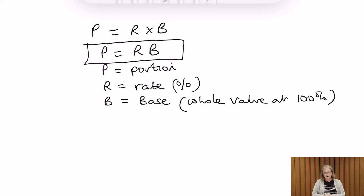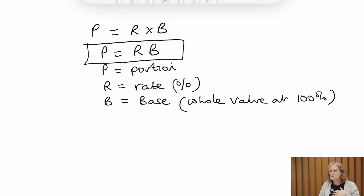With these kinds of questions, the main thing is that we always correctly identify the portion, the rate, and the base, and then we can work out our answer. We always check whatever answer we get to make sure it makes sense and is in context to the question — a useful tip to confirm we've done it correctly.